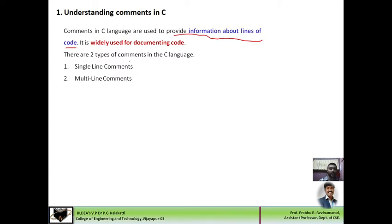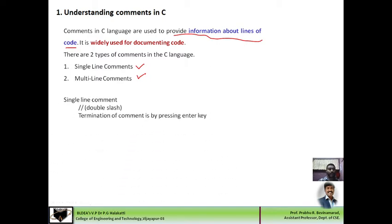The two types of comments are single-line comment and multi-line comment. The compiler will straight away ignore those lines during translating a high-level language program into machine code. Single-line comments are written by using a double slash before any line. For whichever line you want to put a comment, you have to insert the double slash symbol before that line. Then that particular line will be ignored by the compiler during program execution.